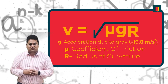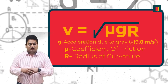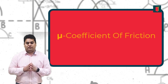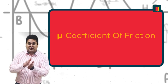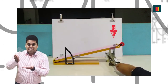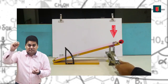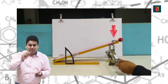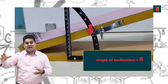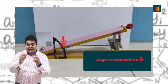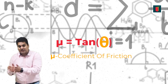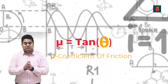The radius of the turn is defined by the design of the circuit or road. To calculate the coefficient of friction, we take an inclined plane, place a block on it, and keep increasing the angle. There is an angle at which the block starts to slide — we call that the angle of repose. If we take the tangent of this angle, we get the coefficient of friction between those two surfaces.